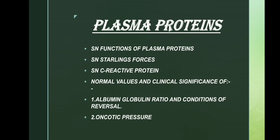The next chapter is plasma proteins. Questions asked include short note on functions of plasma proteins, which is not that important. Short note on Starling's forces is very important. Short note on C-reactive protein is not that important. Normal values and clinical significance of albumin-globulin ratio and conditions in which it gets reversed are generally asked. Oncotic pressure can also be asked.